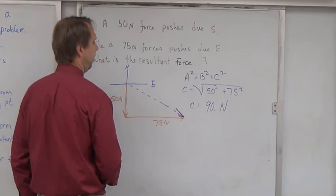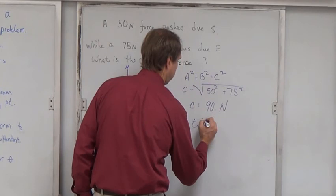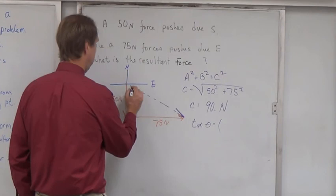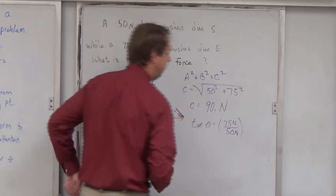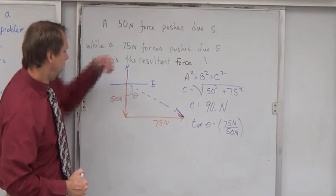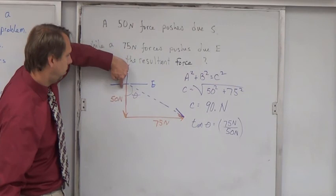I'm going to get the angle. The tangent inverse. The tangent of theta equals - my theta is going to go here. Opposite over adjacent. 75 newtons divided by 50 newtons. If you're curious about where to put your theta, that sometimes does come up. It will always go in between your resultant vector and one of your principal axes. I didn't put it here because I wouldn't know the opposite or adjacent. Those aren't quite as easy to see. I put it here because my opposite being 75 and my adjacent being 50 just makes more sense.